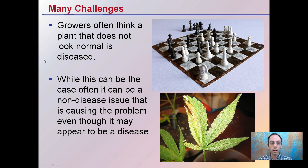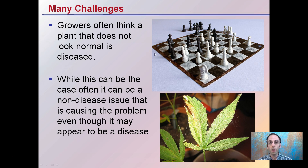Looking at some of the challenges here: growers often think if a plant does not look normal, it is disease. They immediately go to the disease aspect when really it could be something that's not disease oriented. Being able to identify that early is beneficial. While disease can often be the case, it's about figuring out whether the problem is disease or something non-disease related — like a chess game where there's always a different challenge being presented.